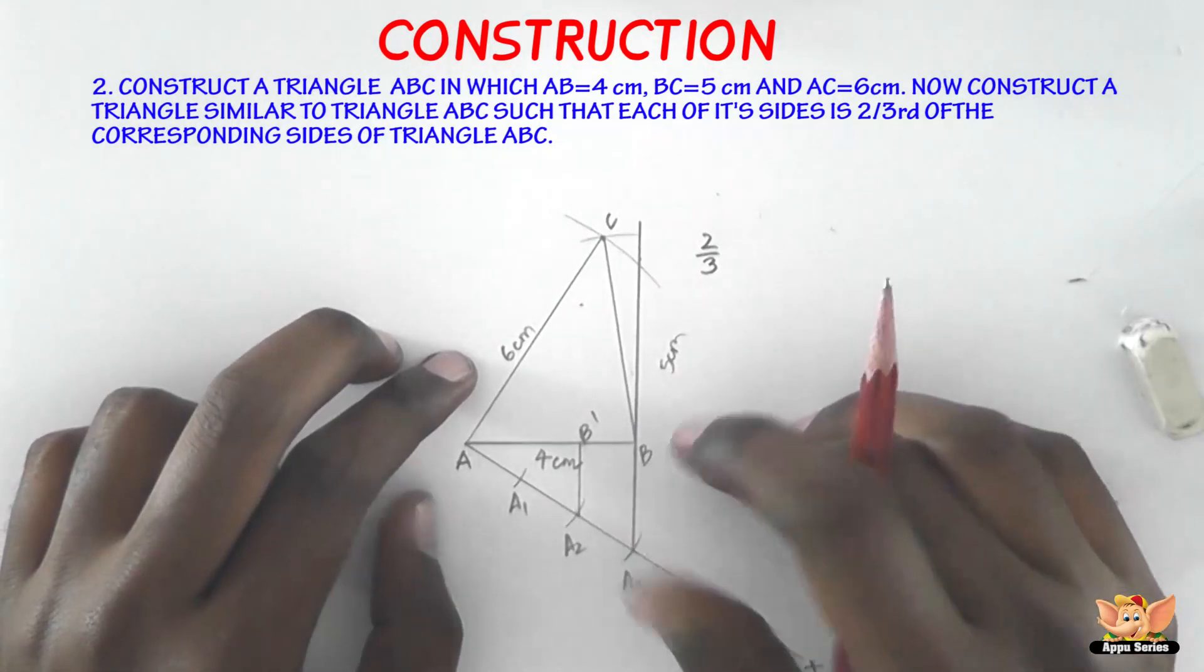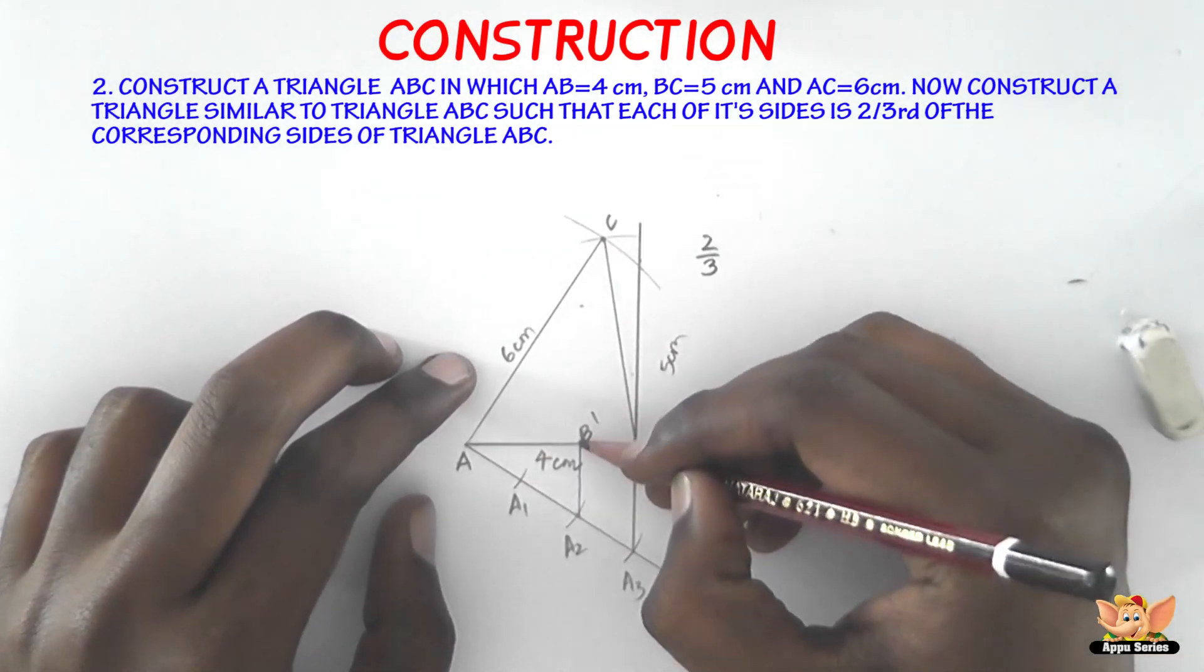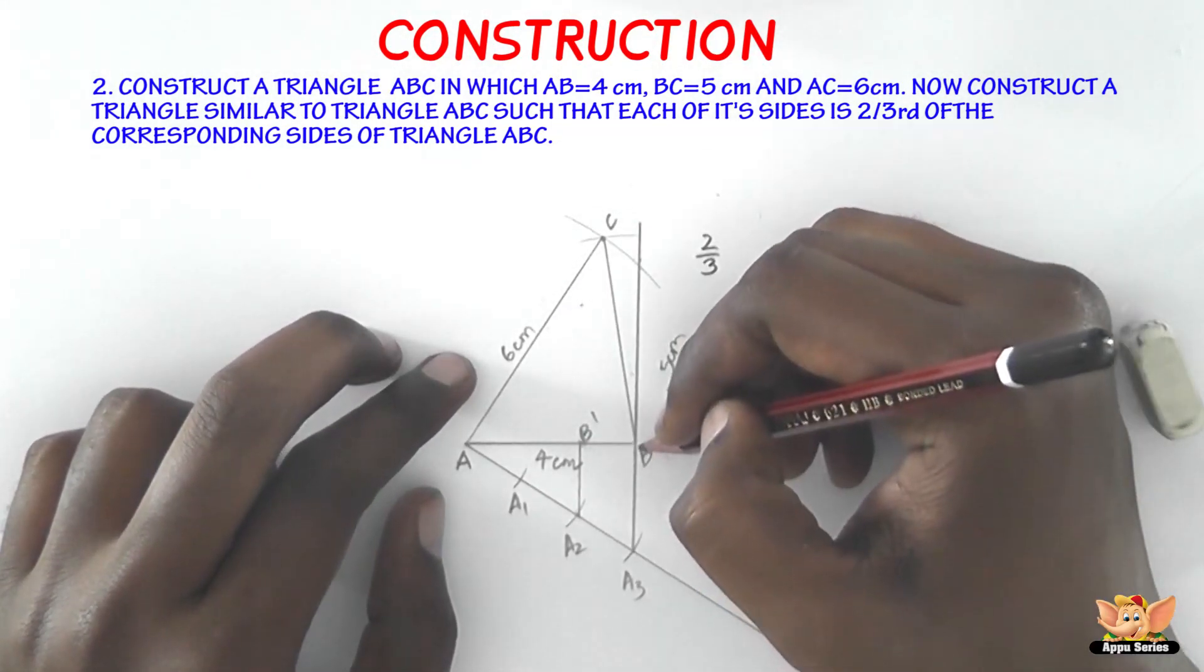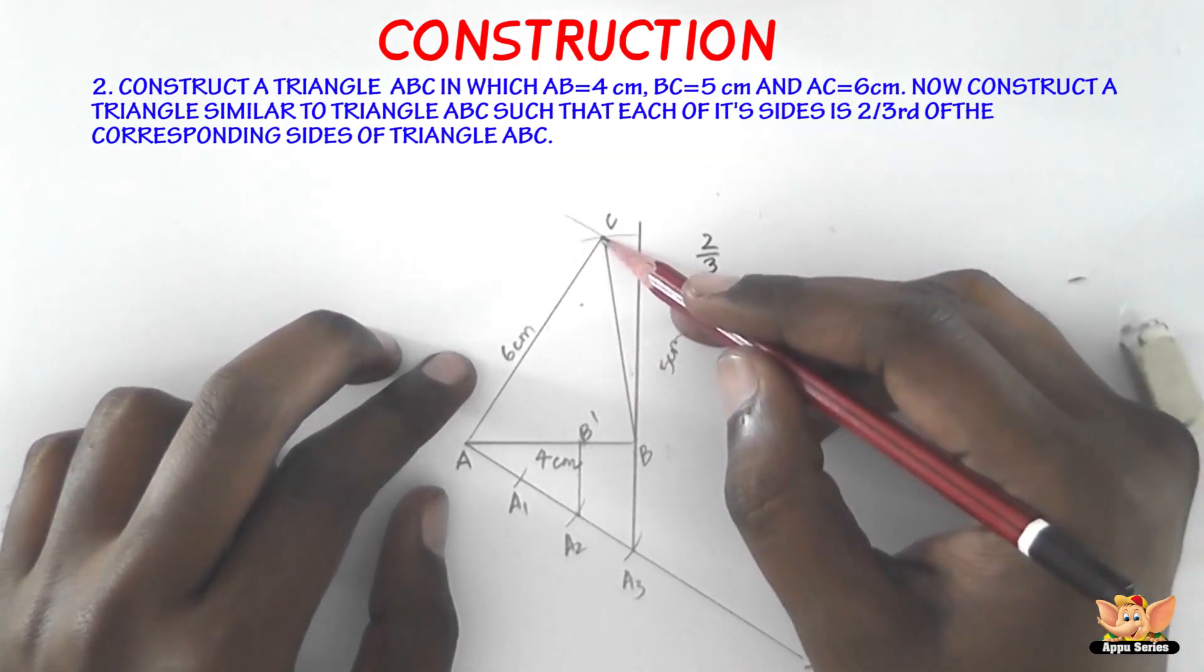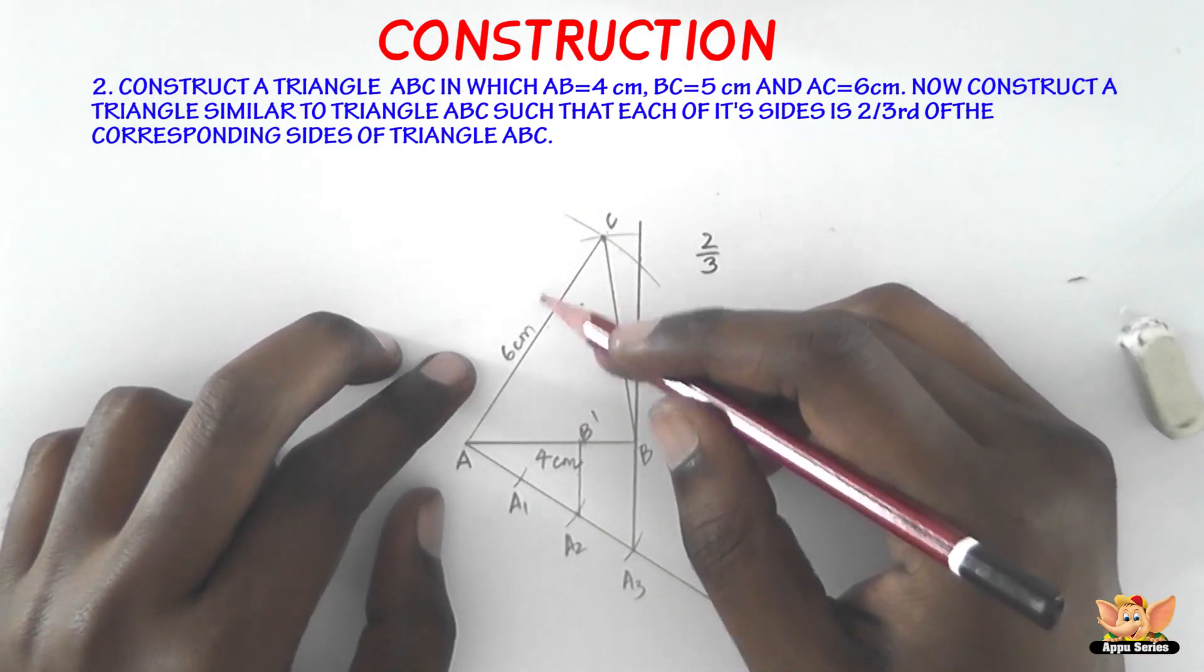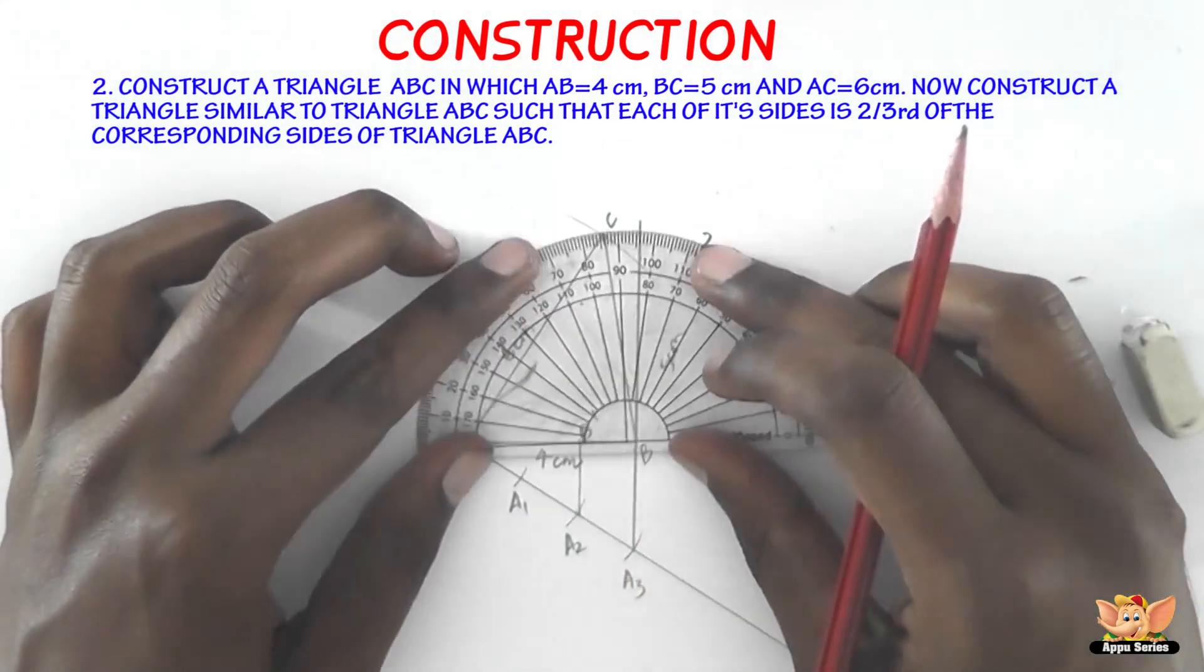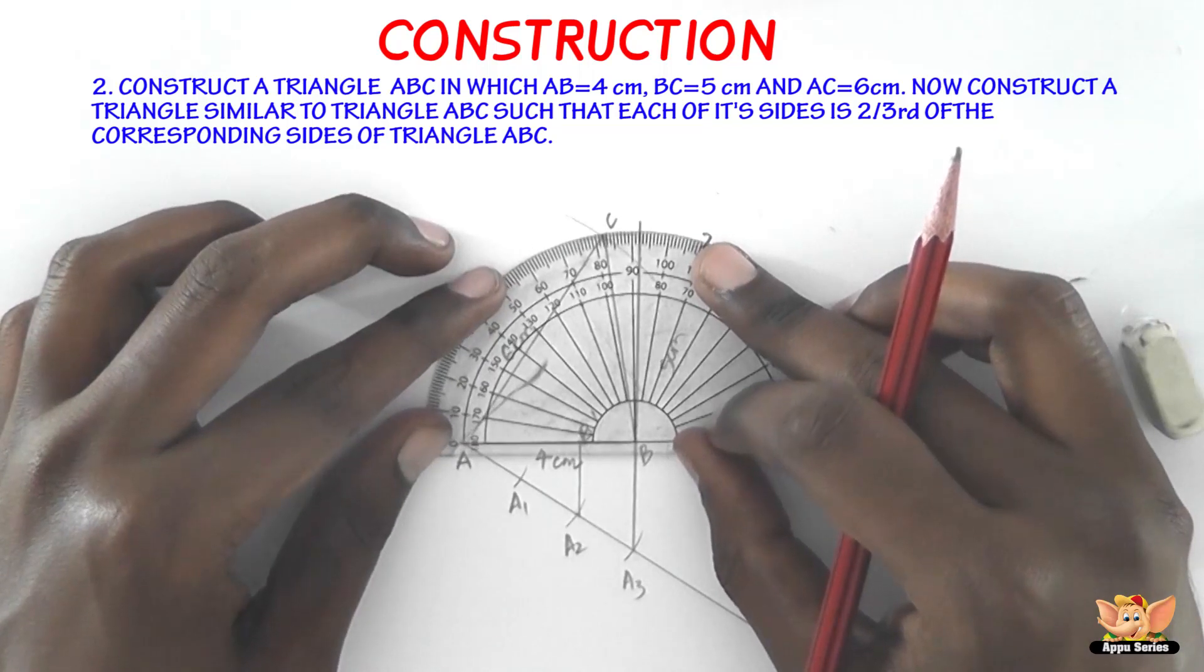Now the next step is to draw a line from B' and join it to AC such that, let's name this C', B'C' is going to be parallel to BC. In order to ensure that, we need to measure the angle that BC forms with AB and make sure that B'C' is also forming the same angle with AB. So let's measure the angle at B here that BC makes with AB.